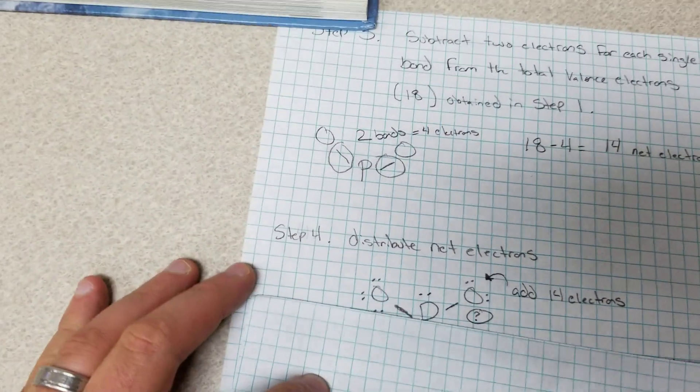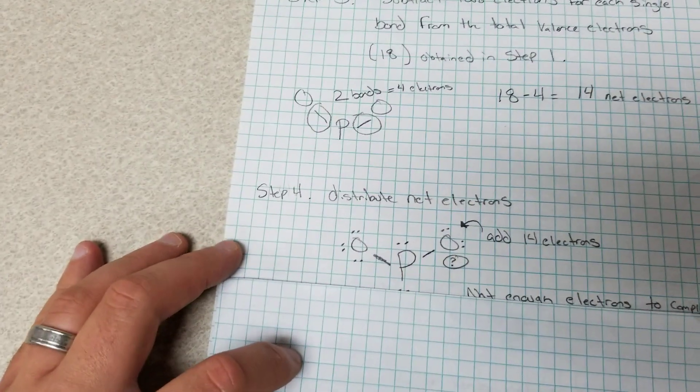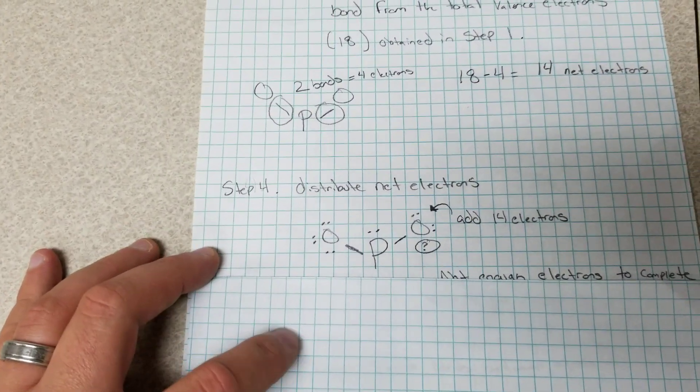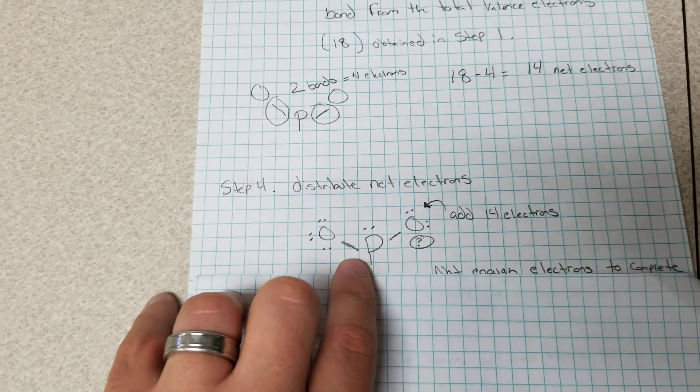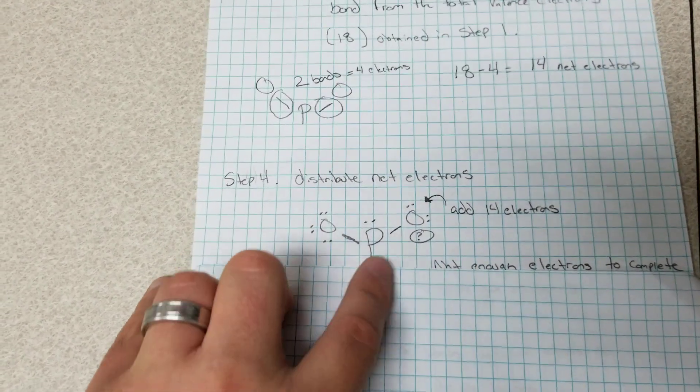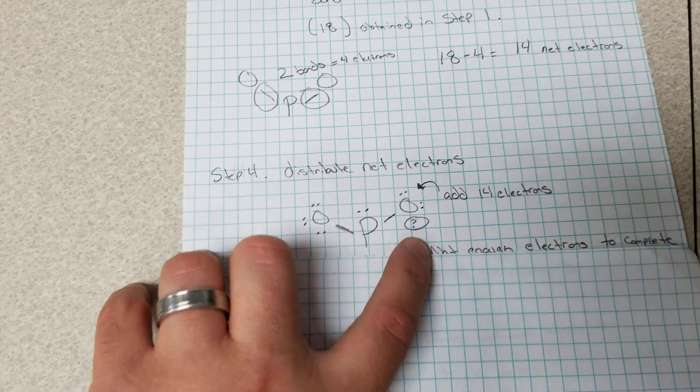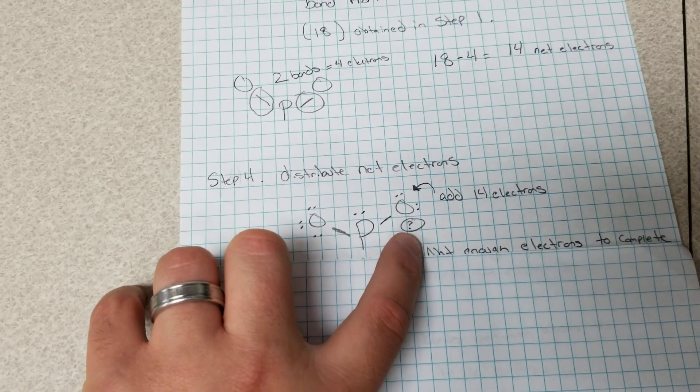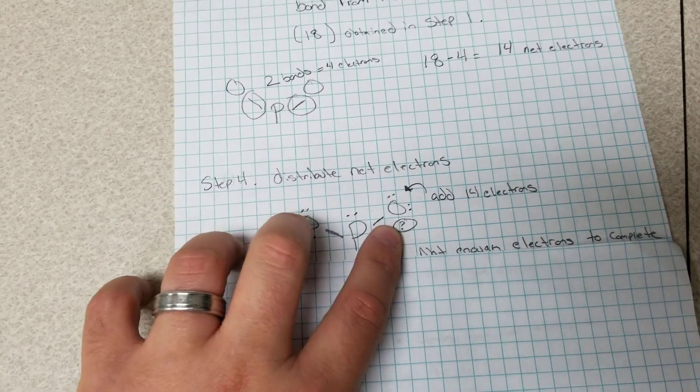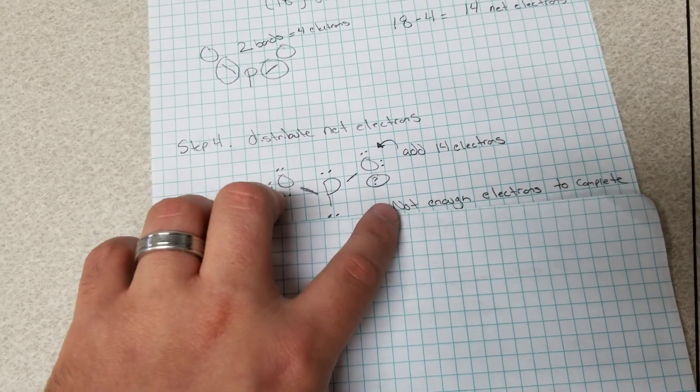In step four we're going to distribute our net electrons. So you can see here that besides our two single bonds, I added 14 more electrons. But the problem right here is we're missing two electrons to complete this noble gas structure that we need.